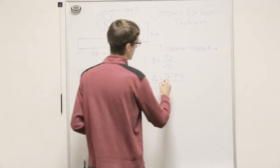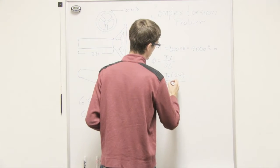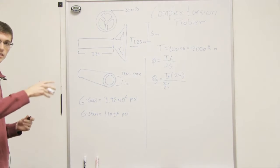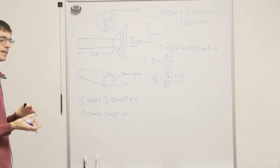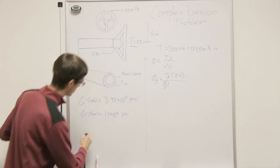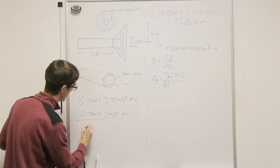J which is pi over two times, now this is a pipe, remember, and a pipe is different than an actual rod. So the J for a pipe is, I'm going to write these down right down here so you can remember them.